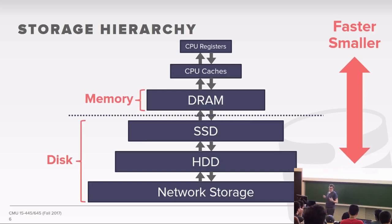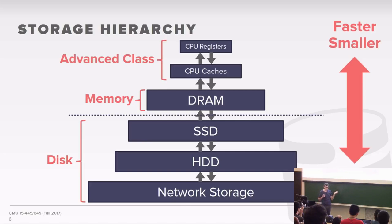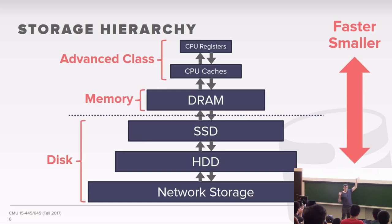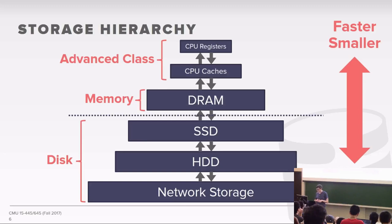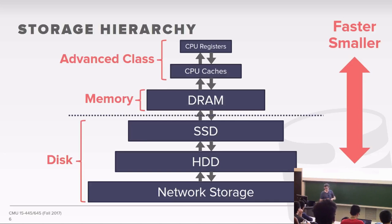Some advanced systems get clever and start worrying about how you store things in CPU registers or CPU caches, but we're not going to cover that here. If everything's on disk, trying to be really smart about getting things into CPU caches is not going to be a huge win because disk is always going to be the slowest thing. In the spring class we'll assume the database is going to be in memory, not on disk, so those optimizations matter more there.